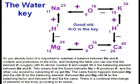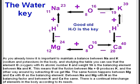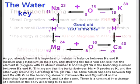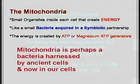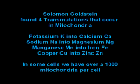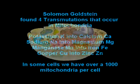Here we have some more water transmutations. Water is the key — by adding or subtracting an oxygen you can take one element to another. The mitochondria, which are small organelles that could even be bacteria, seem to be able to do transmutations with the help of ATP.